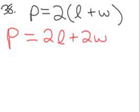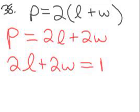And whenever I'm solving for something and I have it on the right side of the equation, that generally bothers me, I don't know why. So I'm going to use the symmetric property and flip-flop everything. So 2L plus 2W equals P.